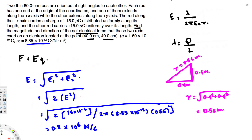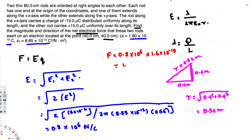Now we need to find the force. Force is F = Eq, where q here is the charge of the electron: 1.6 × 10⁻¹⁹ coulombs. So F = (0.8 × 10⁶) × (1.6 × 10⁻¹⁹), and if you calculate this you get F = 1.36 × 10⁻¹³ newtons. We found the magnitude, but we also need the direction.